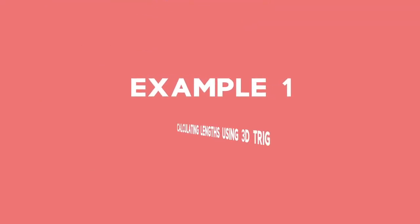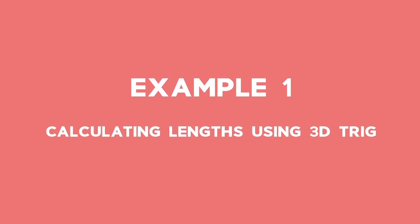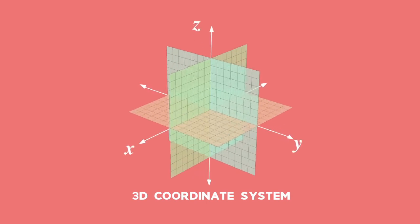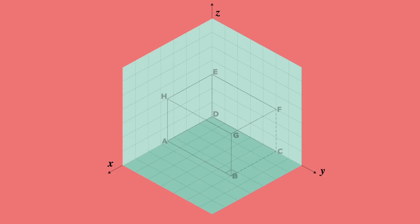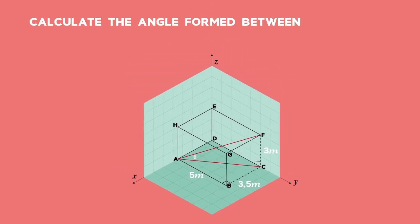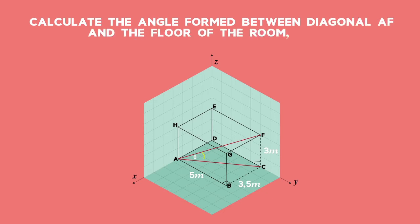Example 1: Calculating lengths using 3D trig. Let's apply what we've learnt about the 3D coordinate system to a 3D trig problem. A room is in the shape of a cuboid, as shown in the diagram. The room is 5 metres long, 3.5 metres wide and 3 metres high. Diagonal AF runs from the corner of the floor to the opposite corner of the ceiling, and diagonal AC is drawn from one corner of the floor to the opposite corner of the floor. Calculate the angle formed between diagonal AF and the floor of the room, ABCD, correct to one decimal place.